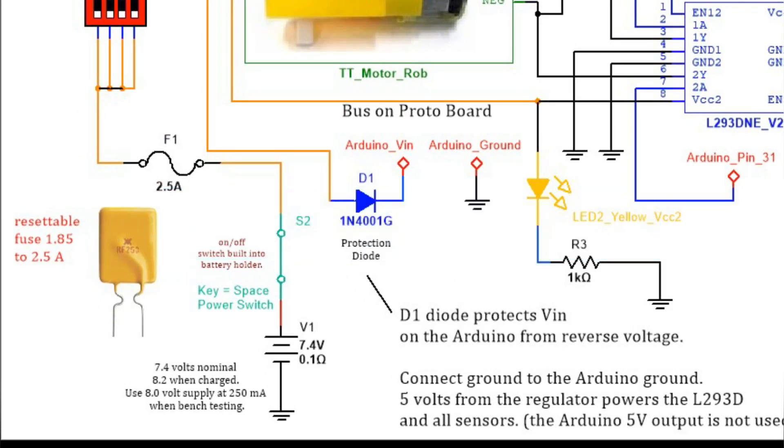Power for the robot comes in through two 3.7 volt batteries, giving you a nominal value of 7.4, but when fully charged they're about 8.2 volts. There is a switch in the case that's very useful to turn the robot power on and off.